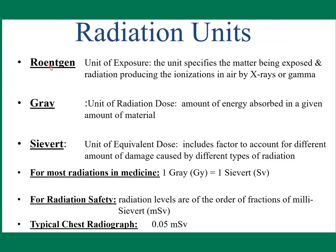The definitions: Roentgen is the unit of exposure, specific to air as the matter being exposed, measuring ionization. Gray is the amount of energy absorbed in a given amount of material. Sievert includes the quality factor of the radiation. For most radiation in medicine, one Gray equals one Sievert. For radiation safety purposes, we use the unit Sievert or milli-Sievert.